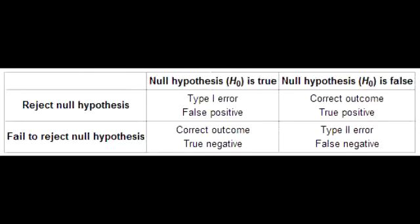What is the mnemonic to help you remember Type 2 Error? Type 2 Error is Beta, and in this you were blind to the difference that did exist. Remember: Type 1 Error is like convicting an innocent man, while Type 2 Error is like setting a guilty man free.